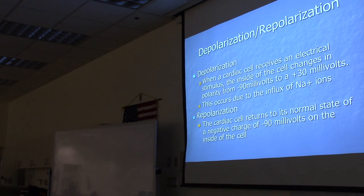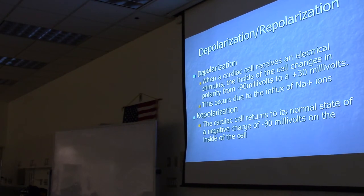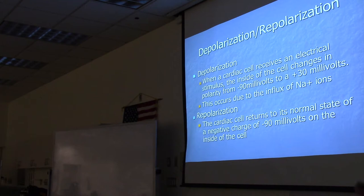When a cardiac cell receives an electrical stimulus, the inside of the cell changes in polarity from minus 90 millivolts to plus 30 millivolts — from negative to positive. This change is caused by sodium moving from outside into the cell, giving the inside a positive charge. Once the cell has a positive charge on the inside, it can contract.